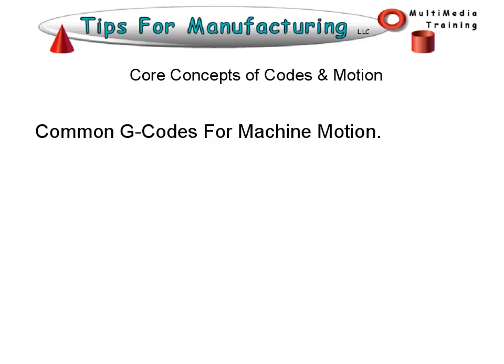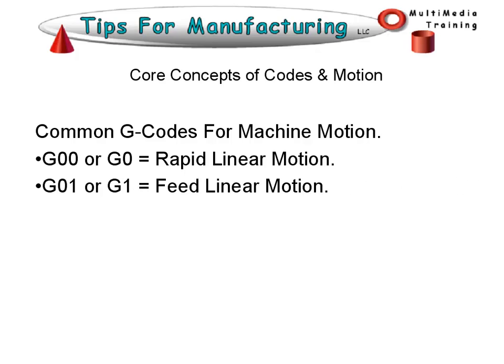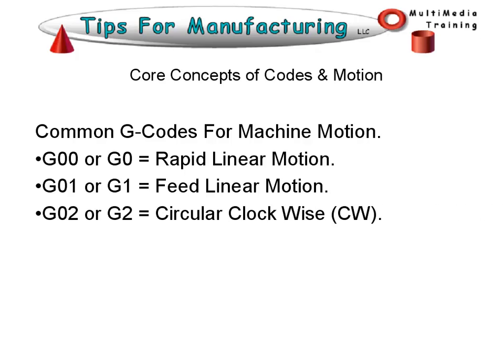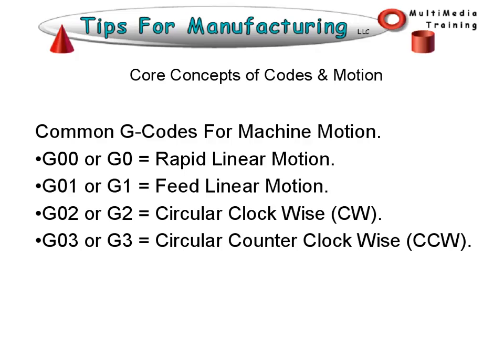The common G codes for machine motion are G00, or G0, which is a linear rapid move. G01, or G1, which is a feed linear move. G02, or G2, is circular clockwise. G03, or G3, is circular counterclockwise.